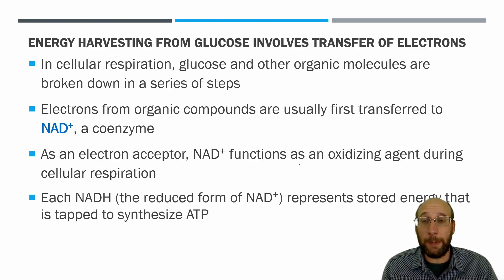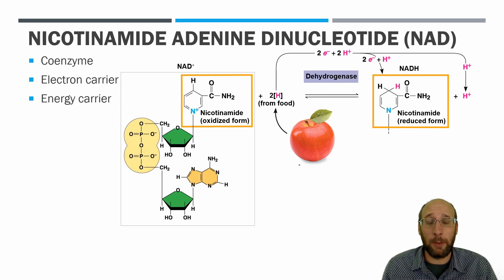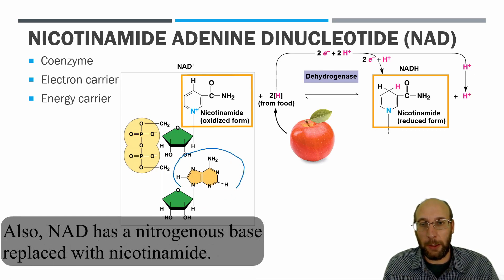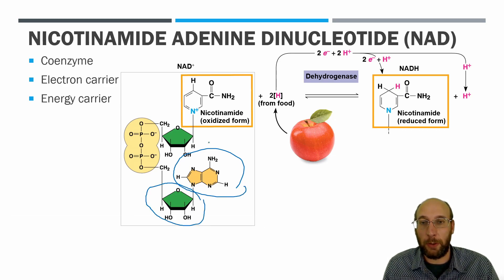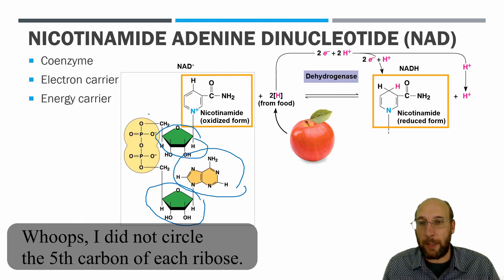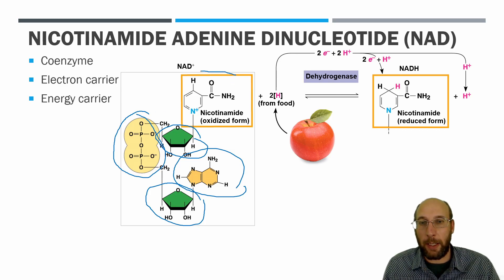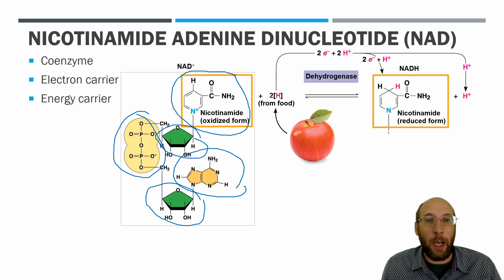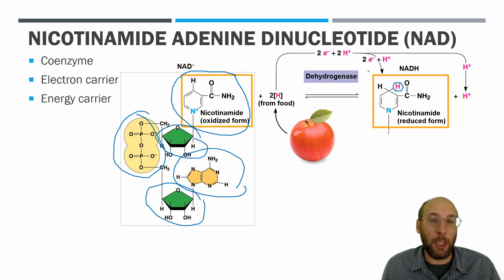NAD stands for nicotinamide adenine dinucleotide. It is a dinucleotide — it has adenine, two ribose sugars, two phosphates connecting them, and a nicotinamide side chain. NAD is a coenzyme electron carrier and energy carrier. NAD⁺ gets two electrons from food along with hydrogens and forms NADH — since it is gaining electrons, that is reduction.